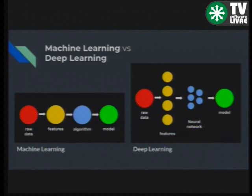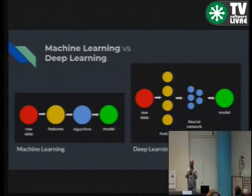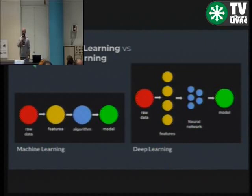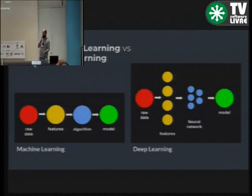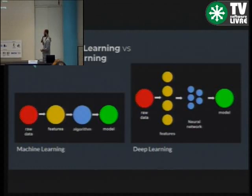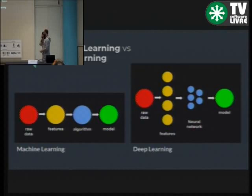Tanto nos algoritmos de Machine Learning como Deep Learning, eles só entendem números. Não tem como entrar com uma frase ou uma imagem no algoritmo — todo dado tem que ser transformado em número. Uma imagem: tu pega a matriz RGB, que é a matriz de cores da imagem. Um texto: tu faz uma análise lexicográfica para pegar sinônimos, nomes próprios, enfim. Mas tudo, antes de entrar nos algoritmos de aprendizado de máquina, obrigatoriamente tem que ser convertido em números. No Machine Learning, a partir dos dados raw, a gente extrai features, seleciona o algoritmo que vai utilizar, e se obtém um modelo matemático de predição.